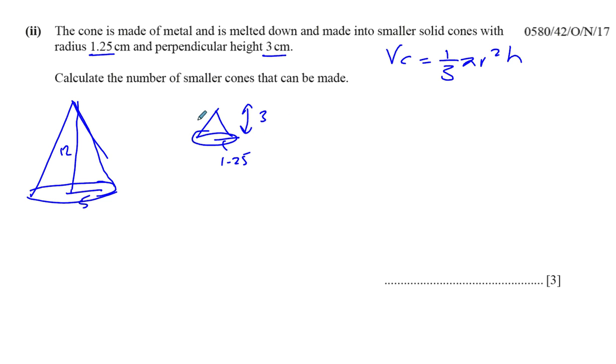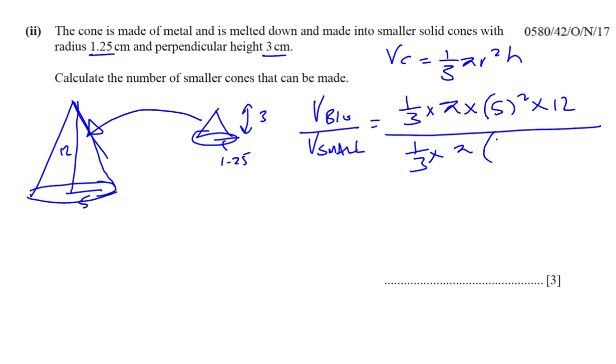If you want to find how many of these small cones will fit into the big cone, take the volume of the big cone, divide by the volume of the small cone. It'll tell me how many can fit into that. The big cone is a third times pi times r squared, which is 5 squared times 12. The volume of the smaller cone is a third times pi times 1.25 squared times 3. The third pi's will cancel out. The 3 will cancel out with the 12, leaving it with 4. You end up with 4 times 25, which is 100, over 1.25 squared.